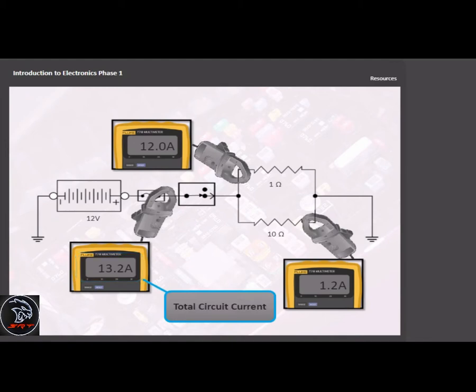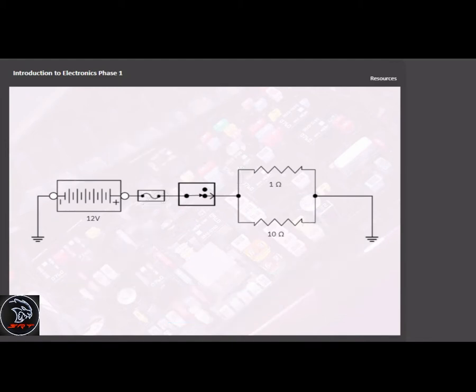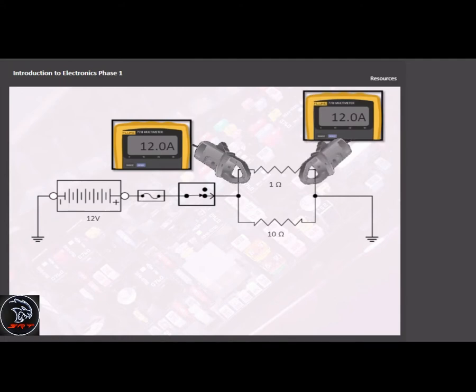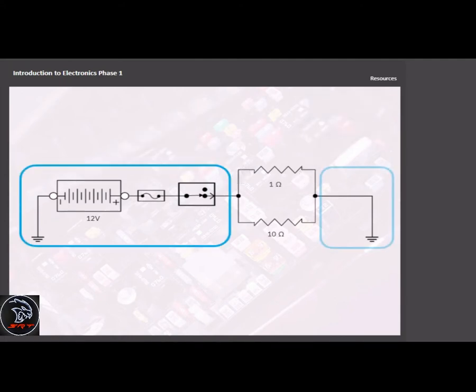Since current is the same in each section of a branch, it can be measured on either side of the load. The same goes for the main trunks. Current is the same on the power and ground sides of the shared portions of the circuit.